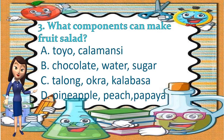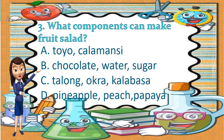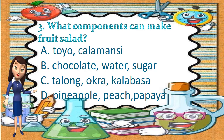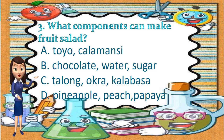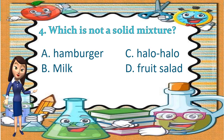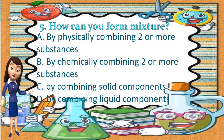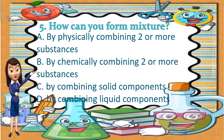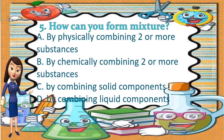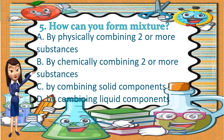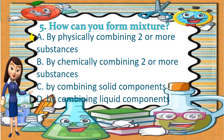Number 3: What components can make fruit salad? A. Toyo and Kalamansi, B. Chocolate, Water, and Sugar, C. Talong, Okra, and Kalabasa, D. Pineapple, Peach, and Papaya. The answer is letter D — Pineapple, Peach, and Papaya. Number 4: Which is not a solid mixture? A. Hamburger, B. Milk, C. Halo-halo, D. Fruit Salad. The answer is B — Milk. Number 5: How can you form a mixture? A. By physically combining two or more substances, B. By chemically combining two or more substances, C. By combining solid components, D. By combining liquid components. The answer is letter A — by physically combining two or more substances.